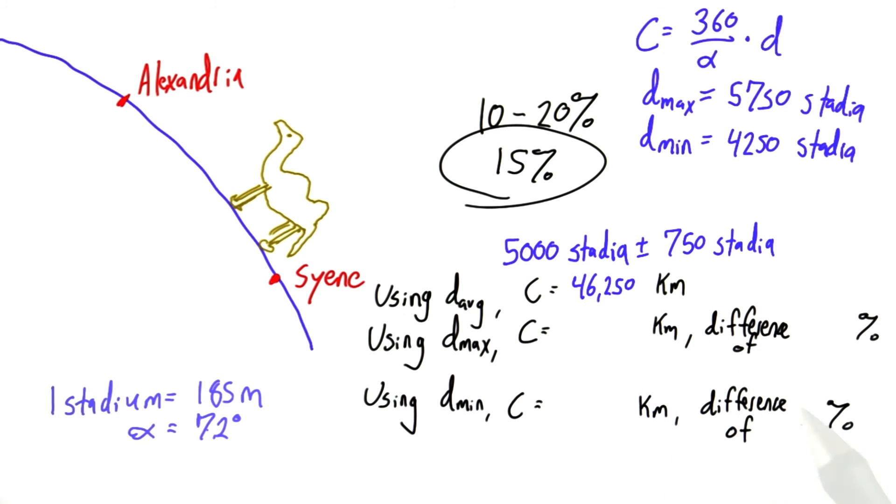Do the same thing for d min, and as a reminder, one stadium is 185 meters, and alpha, which is this angle here in the equation, is 7.2 degrees. So, go ahead and fill this out.